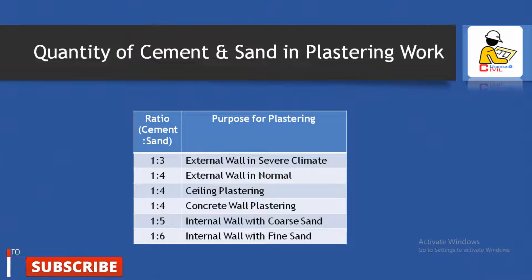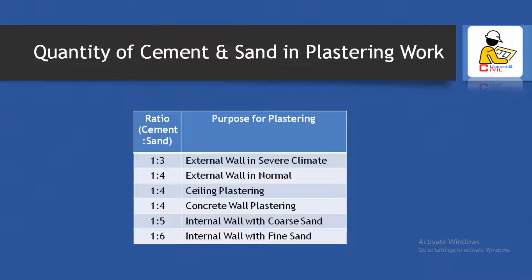An important point regarding plastering work is the list of cement-to-sand ratios for different environmental exposure conditions. A 1:3 ratio is used for external walls in severe climates. A 1:4 ratio is for external walls in normal conditions and concrete wall plastering. A 1:5 ratio is for internal walls with coarse sand, and 1:6 is for internal walls with fine sand.